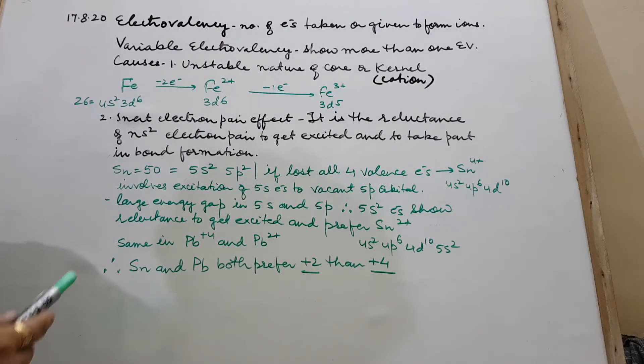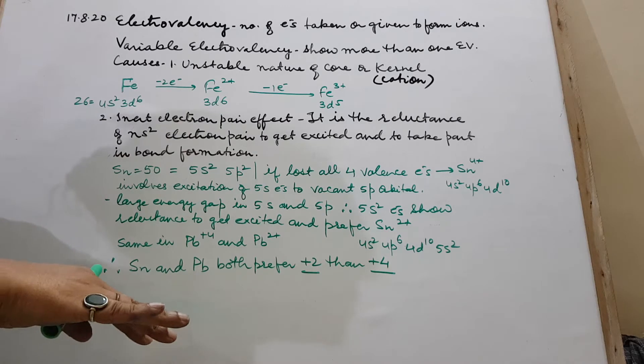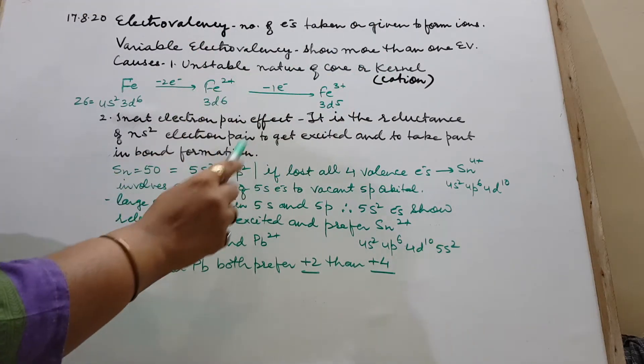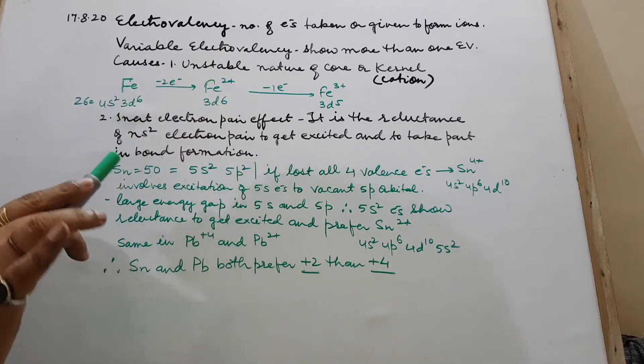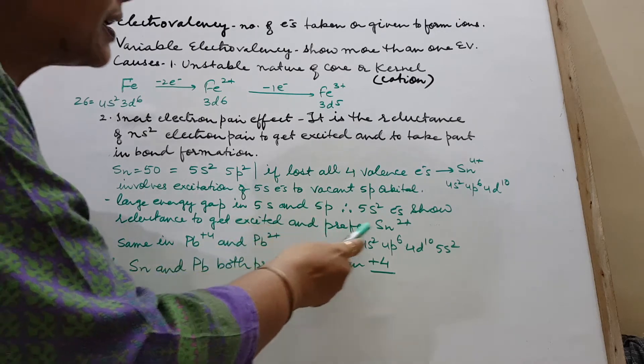5s2 electrons show reluctance to get excited and preferred plus 2. They don't want to go to higher shell. They remain there only. They show reluctance. Hence, instead of all 4 going out, only p2 going out, s2 do not take part in bond formation. They don't get excited and it prefers plus 2.